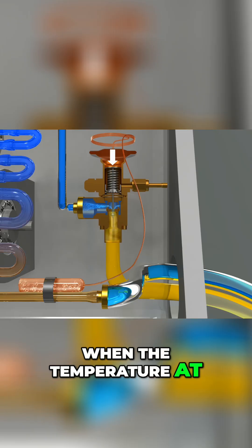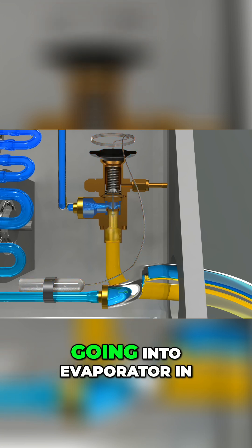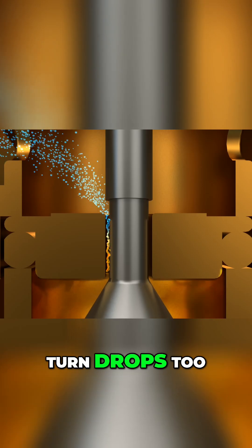When the temperature at the exit of an evaporator drops, gas pressure drops and the amount of refrigerant going into the evaporator in turn drops too.